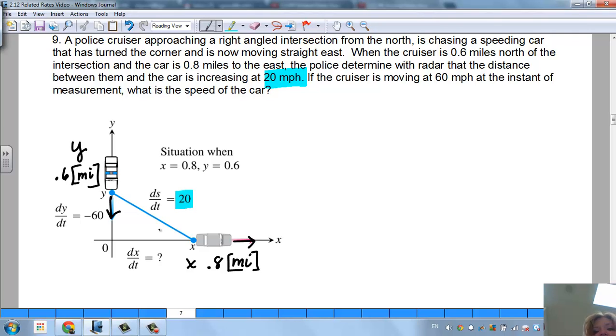It says, if the cruiser is moving at 60 miles per hour, so we know this, but if you look over here, it shows a negative 60 because it's coming close. The distance is closing in, so it's going to be a negative 60 miles per hour. At the instant of the measurement, what is the speed of the car? So I have an s here, I have x and y. This should look familiar.